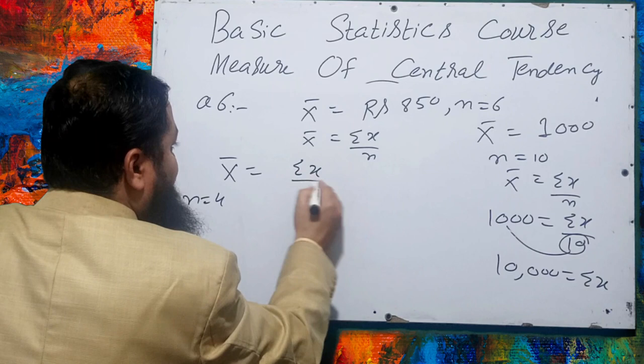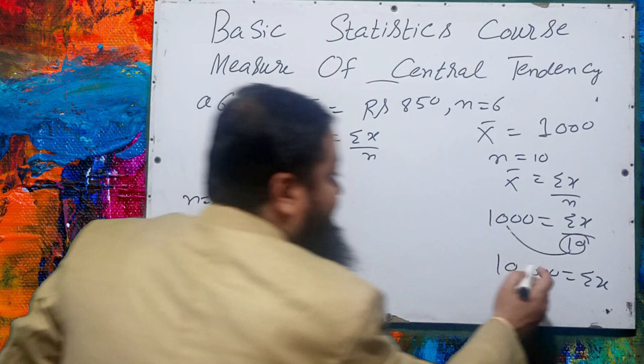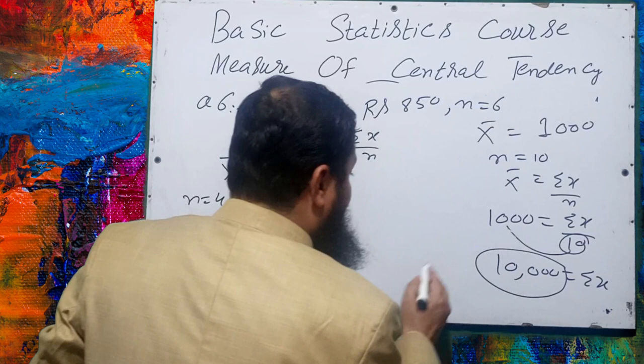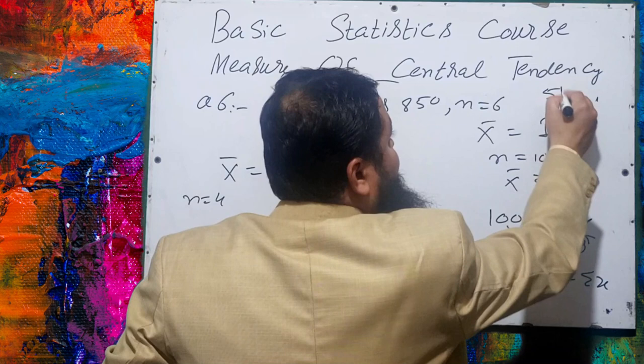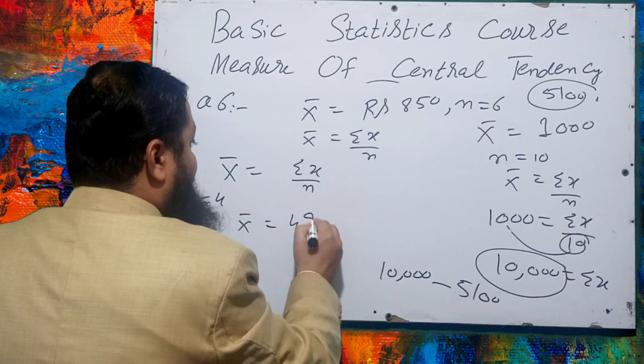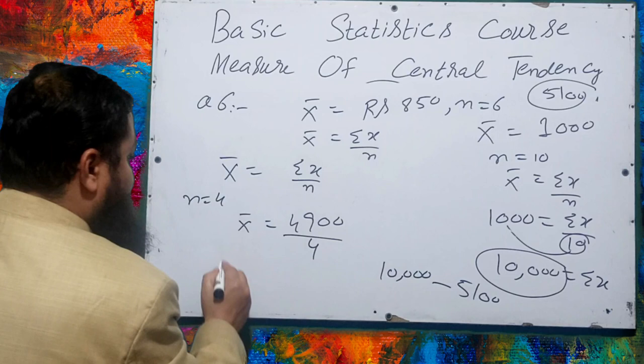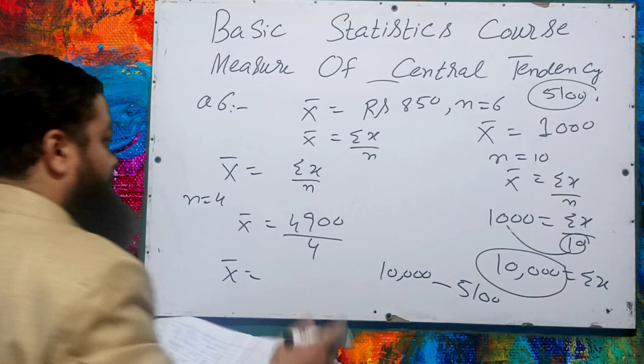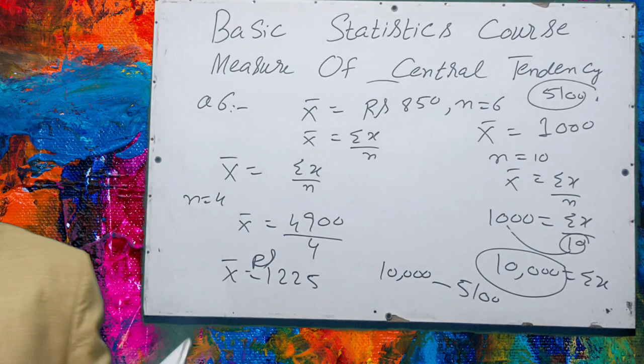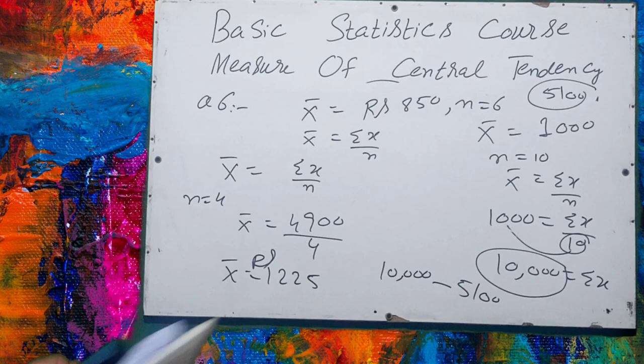For the 4 additional workers: summation x = total for 10 workers minus total for 6 workers = 10,000 − 5,100 = 4,900. Mean of 4 workers = 4,900 / 4 = Rs. 1,225. This is a very important question for all statistics papers.